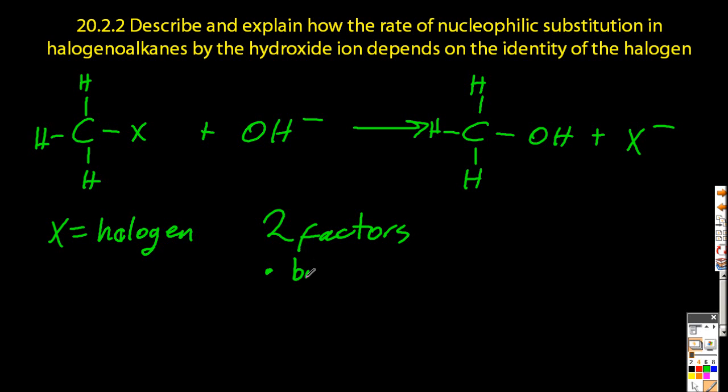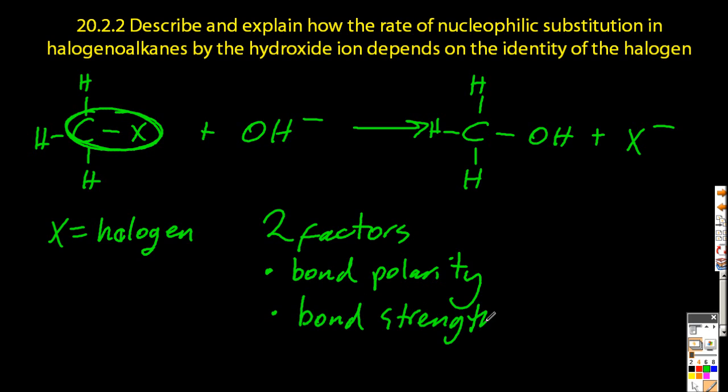There are two factors governing how fast this reaction will occur. There's bond polarity, specifically the carbon and halogen bond, and the strength of this bond as well, or the bond energy, of that very same carbon-halogen bond.